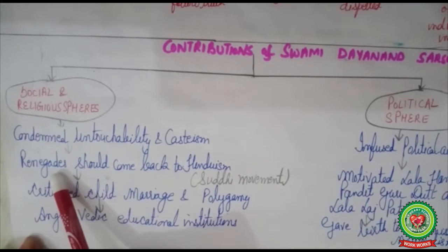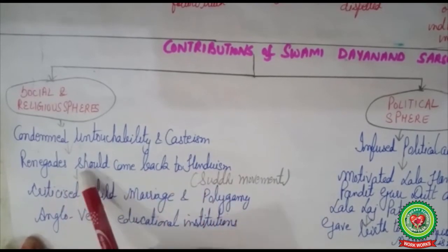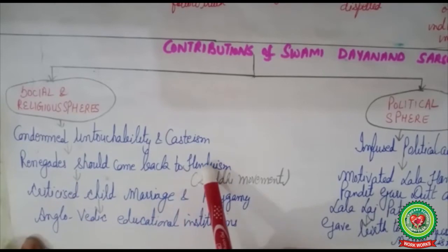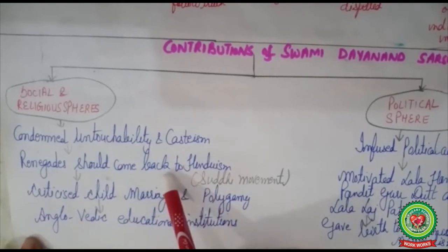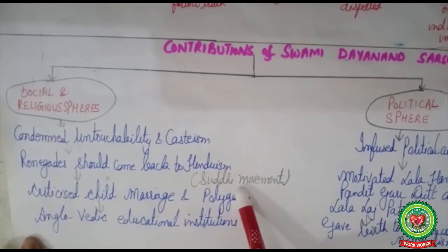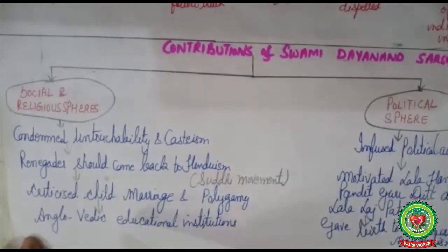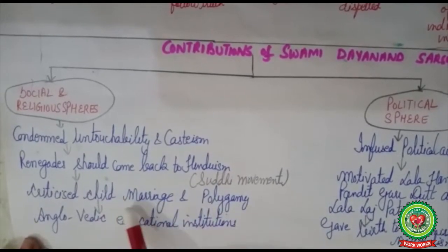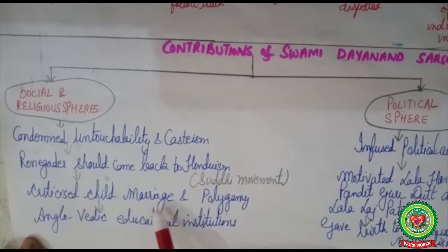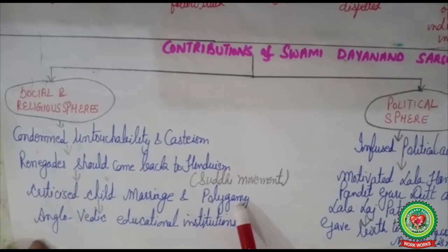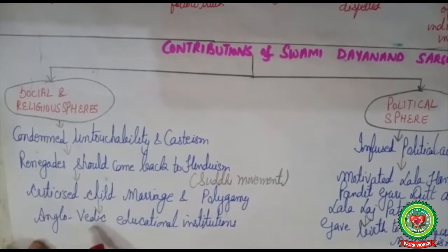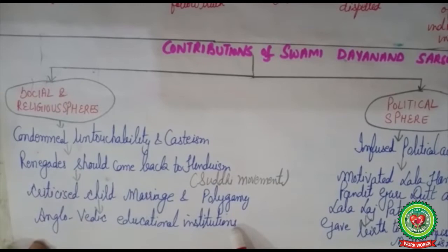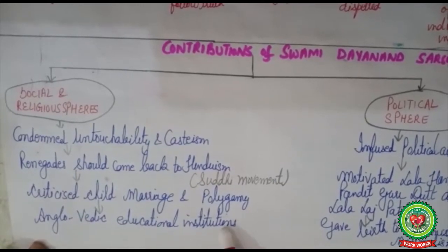He was of the view that renegades — those who had deserted Hinduism and adopted Christianity or other religions — should come back to Hinduism, and for that he started the Shuddhi movement. He criticized child marriage and polygamy, believing a person should not marry early and should not have more than one wife at the same time. He also set up Anglo-Vedic educational institutions, and today all DAV schools and colleges are the product of Arya Samaj.